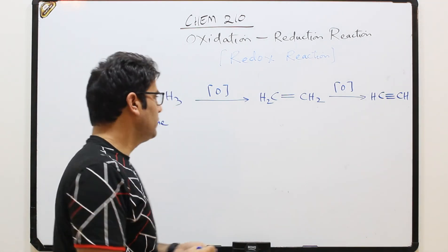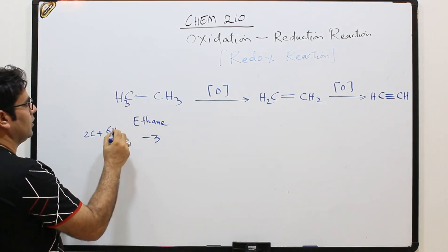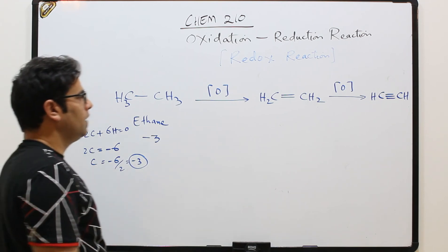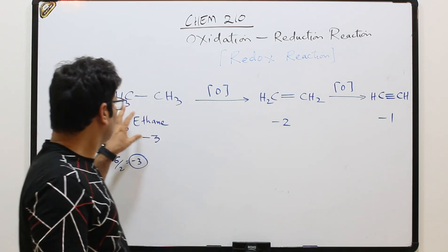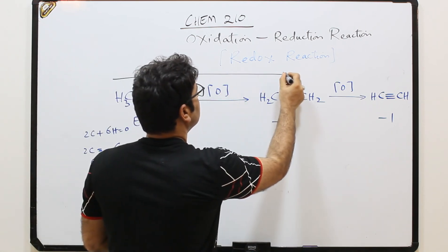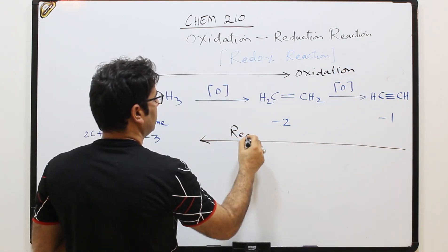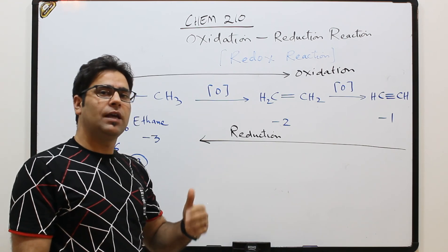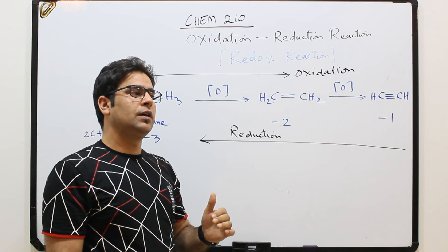In terms of oxidation numbers: for ethane, carbon is −3 (since 2C + 6H = 0, so carbon = −6/2 = −3). For ethene, carbon is −2. For ethyne, carbon is −1. Going in the forward direction (−3 → −2 → −1) is oxidation; going in the reverse direction is reduction. Those reactions where oxidation and reduction take place simultaneously are called redox reactions. We will continue this topic in the next lecture.